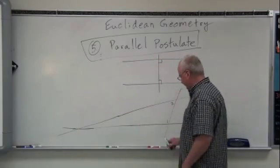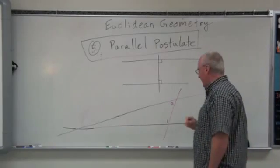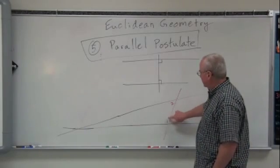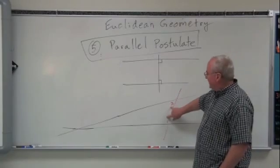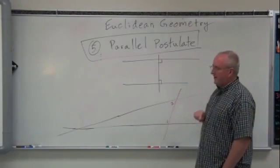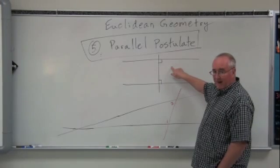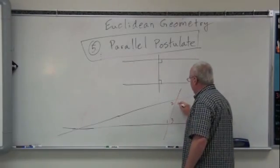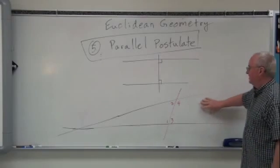They will meet and intersect. Let's state it once more: if two lines are intersected by a third line such that on one side the interior angles added together are less than two right angles, then those two lines will intersect on that side. We can extend this by saying if angle one and angle two are right angles, then those two lines will never intersect. Furthermore, if those two angles — let's call them three and four — when added together are larger than two right angles, then they will also never meet.